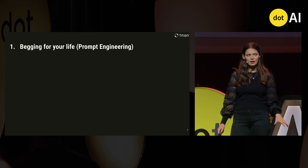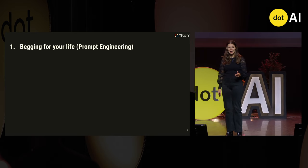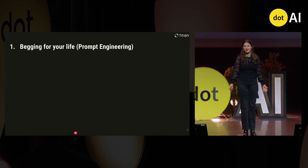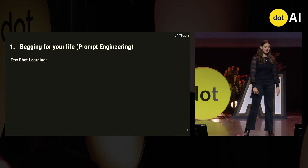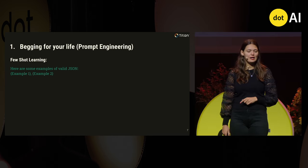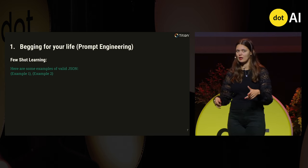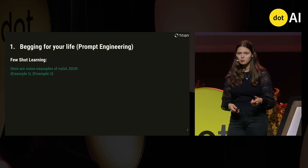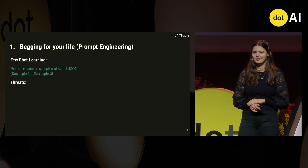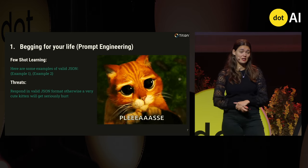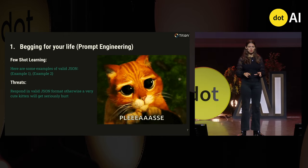The begging-for-your-life approach — as an industry we've decided to call this prompt engineering — is actually more like trying to convince a toddler to do what you've told it to do. There are broadly two ways: one is few-shot learning, showing the model examples of good behavior. My favorite method is actually threatening it — say, respond in valid JSON, otherwise a very cute kitten is going to get seriously hurt. Surprisingly, this actually works, which is somewhat concerning.